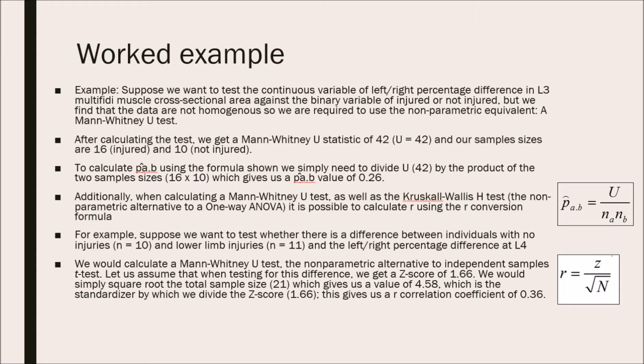After calculating the test, we get a Mann-Whitney U statistic of 42, U equals 42, and our sample sizes are 16 for injured and 10 for not injured. To calculate the P̂A.B using the formula shown, we simply need to divide the U statistic, which is 42, by the product of the two sample sizes, 16 times 10, which gives us a P̂A.B value of 0.26.